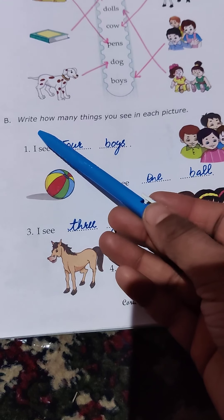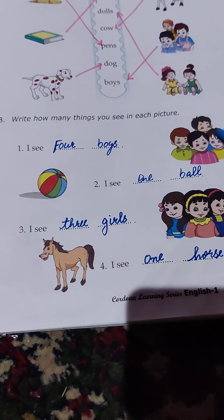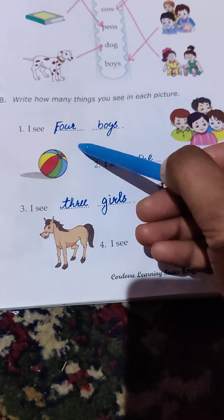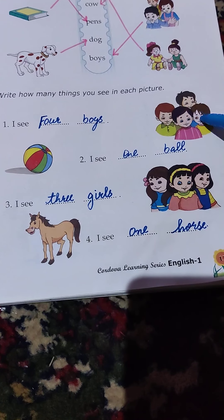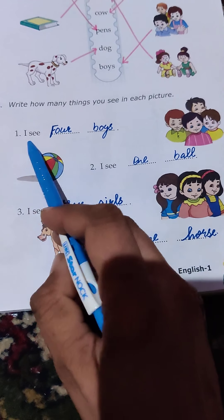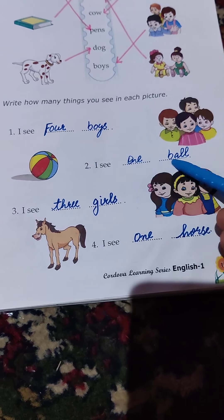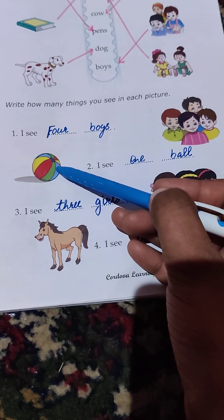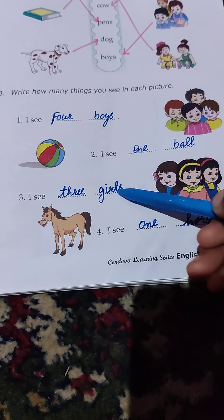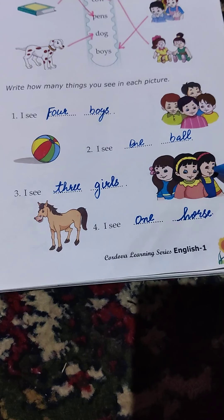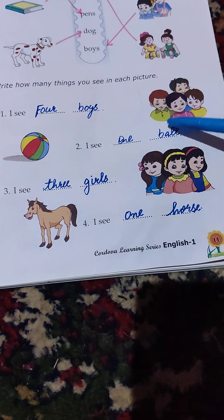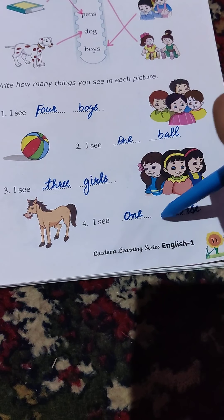Let's start. Write how many things you see in each picture. Here we have to count and see whether we have singular objects or plural objects. I see blank boys — let's count: one, two, three, four — so I write four boys. I see blank ball — here we have only one ball, so I write I see one ball. I see blank girls — one, two, three girls — I see three girls. And here is only one horse: singular horse, singular ball, plural boys, plural girls. I see one horse.